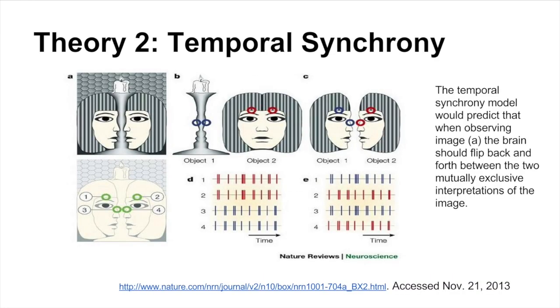The temporal synchrony theory, in contrast, deals more with the neural networks. In order for binding to occur, neurons have to fire together in synchrony. So if within an object, certain features are recognized by the brain to go together, then neurons will fire together to create that recognition.